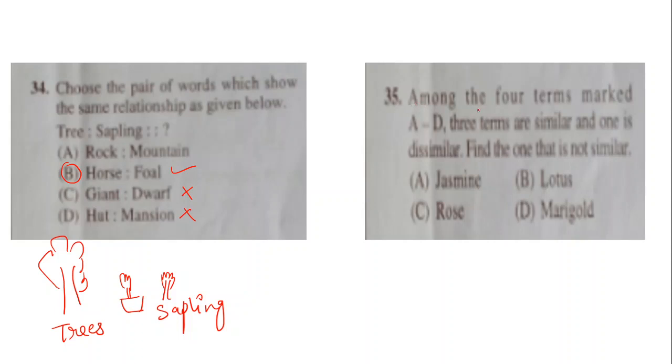Let's look at question 35. Among the four terms marked A to D, three terms are similar and one is dissimilar. Find the one that is not similar. Options are jasmine, lotus, rose, and marigold. The correct answer is option B. Those who have marked option B as their answer, it is correct. Because all these are land flowering plants and lotus is a flower that grows in water. And all these grow on land. Hence, the answer is B.